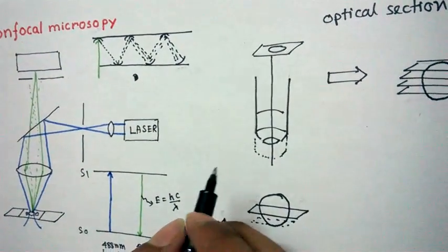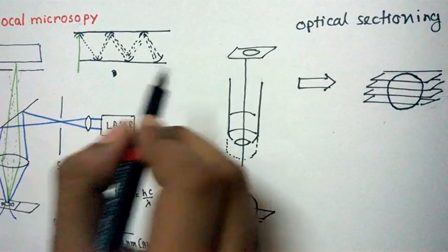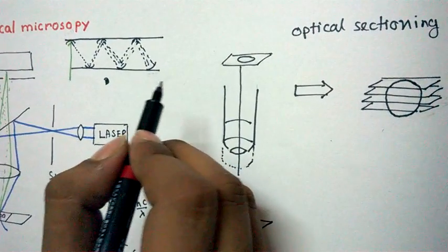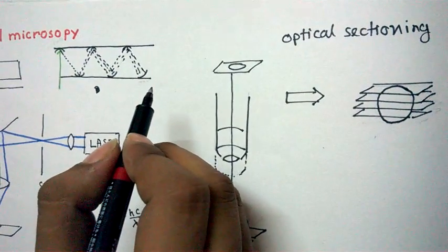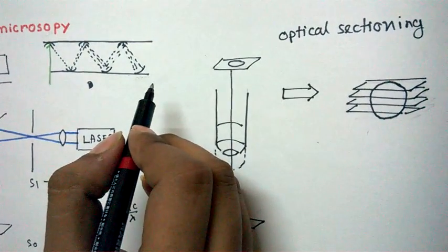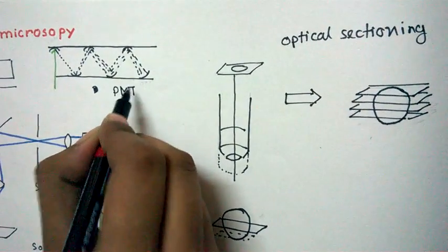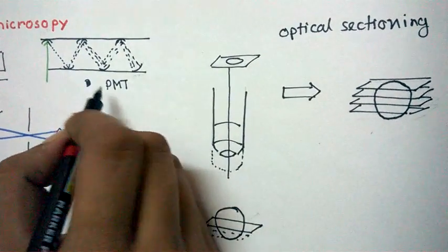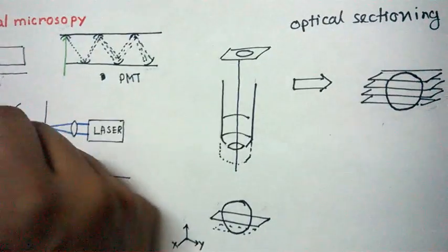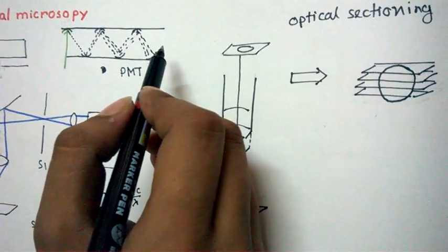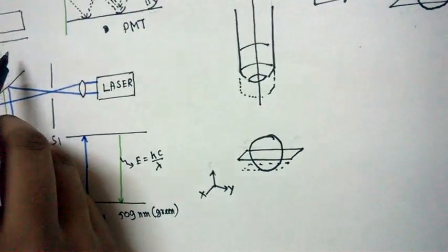That is why the name is photomultiplier tube, or PMT. Because confocal is a point scanning method, we are gathering information from each individual point, and the light coming from one point can be very small — a very little amount of light is available. Without amplifying that light we are not able to get the signal. To gain the signal, this PMT technology multiplies the light coming from the specimen and shows us an amplified signal.